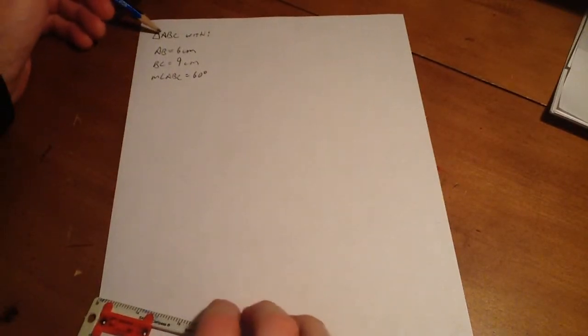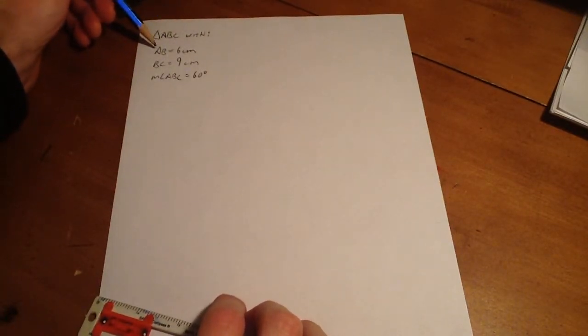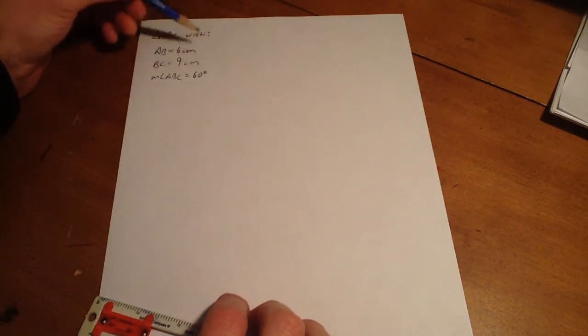We're asked to make a triangle ABC with the following information: A to B is 6 cm, B to C is 9 cm, and angle ABC is 60 degrees.